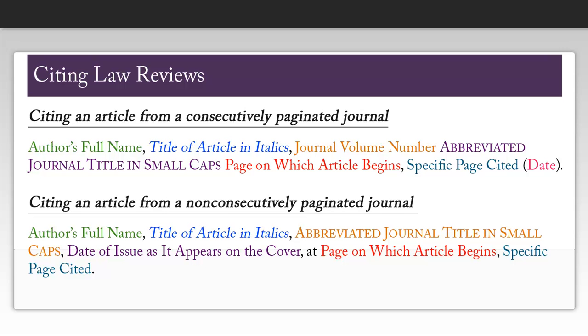For a consecutively paginated journal, what you are going to need is the author's full name, the title of the article in italics, the volume number for the journal, the abbreviated journal title — which you can find by using Table T13 in the Blue Book — the page number on which the article begins, the specific page number that you are citing, and the date this article was published.